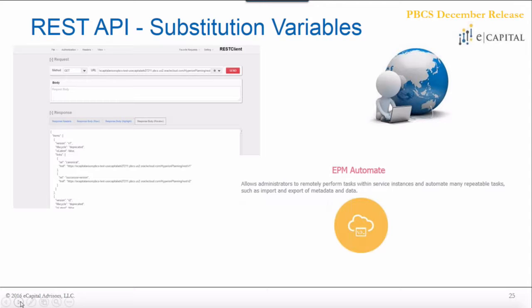Moving on to other features in this release: one new feature coming out on Friday, as Ryan said, is that you can now update your substitution variables using REST API commands. A REST API command is something you can do through a web browser, where you're able to use different methods — such as retrieve values, update values, and things like that.